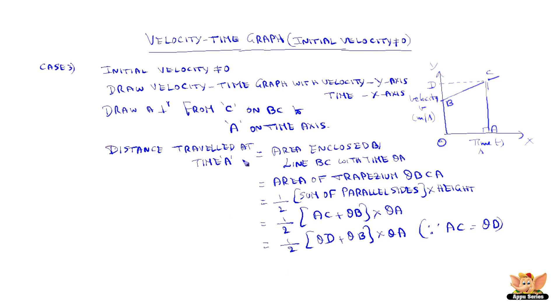So distance travelled where the initial velocity is at B is the area of trapezium OBCA.